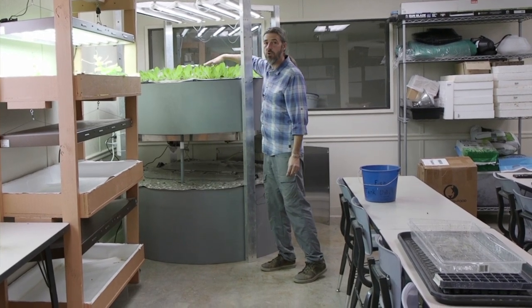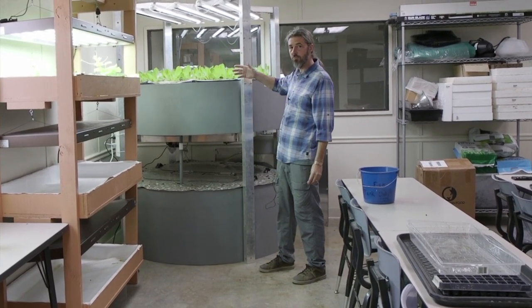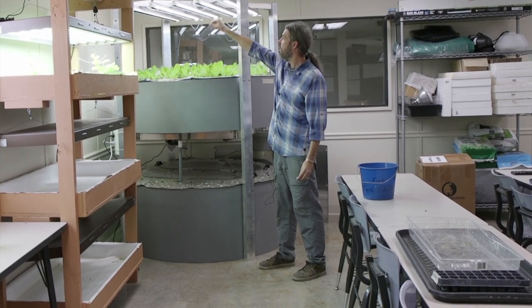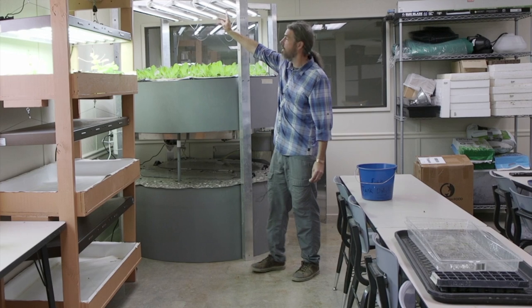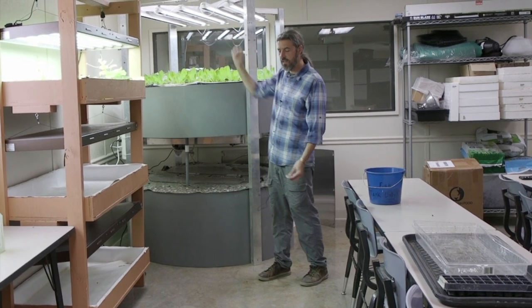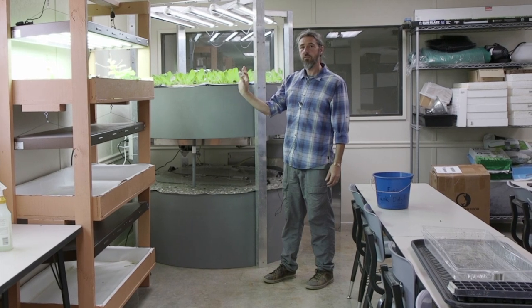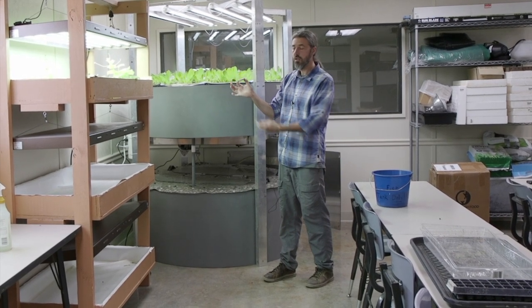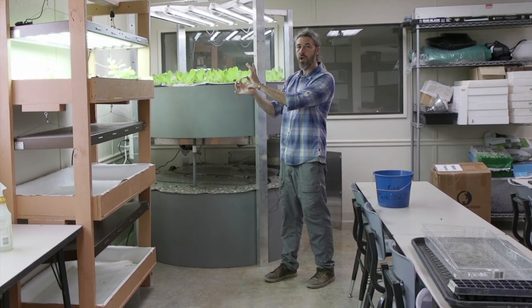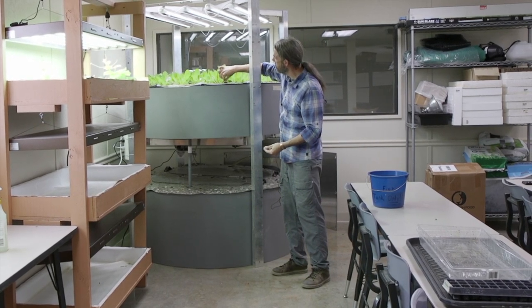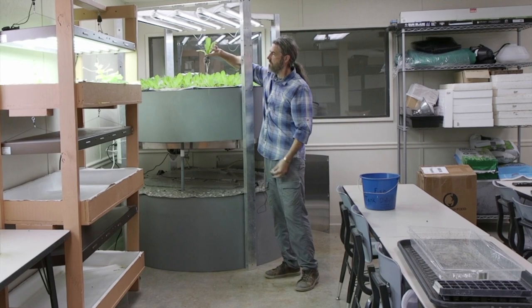The plants above are on a floating raft. These are T5 fluorescent lights. We will swap these out soon with LED lights. We're using a media that's a jiffy plug, a jiffy coco plug. When I put this plug in water it swells up and then I drop a seed in.